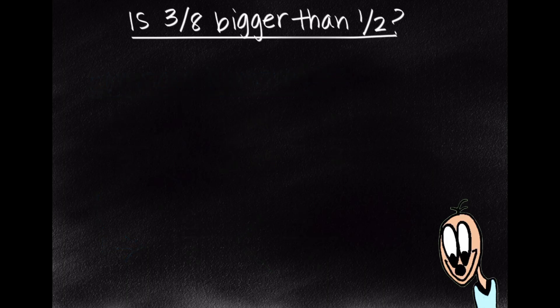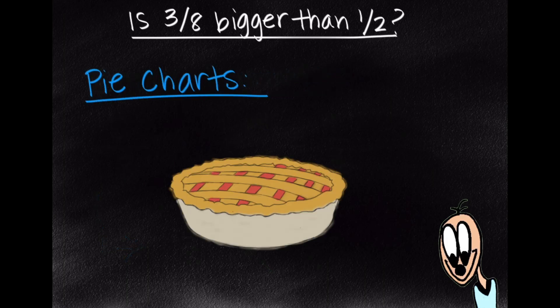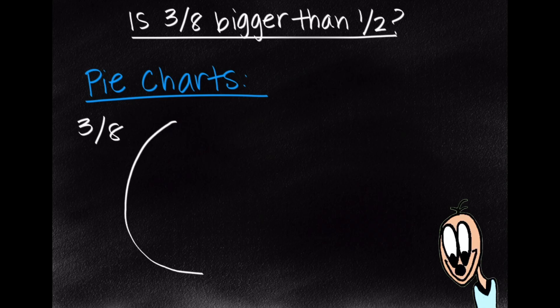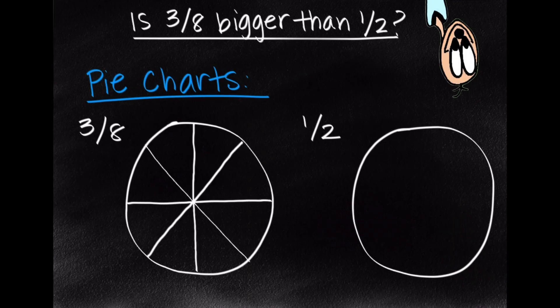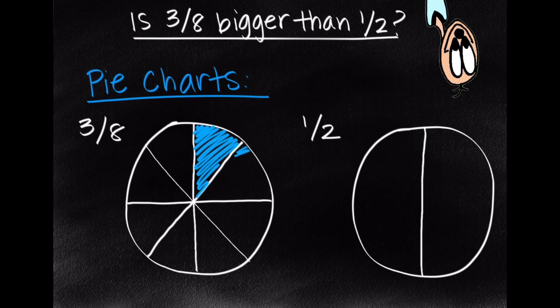The next method is to create two pie charts and visually compare them. So we've got 3 eighths on the left here. We're going to divide our pie into eight parts, and on the right we have 1 half, so we're going to divide it into two parts. Because we only have three out of eight parts for 3 eighths, we're going to color in three of the wedges, three of the slices in our pie chart.